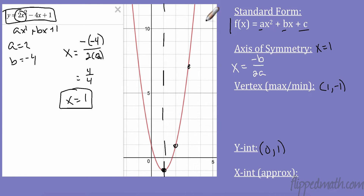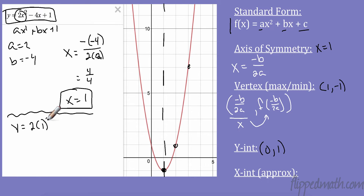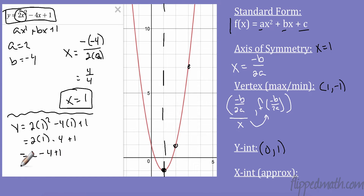Our vertex x-coordinate is the same as the axis of symmetry value. To find the y-value, we plug that x into our function. So I'm going to plug negative b over 2a — in this case, x equals 1 — into the function. y equals 2 times 1 squared, minus 4 times 1, plus 1. That's 2 minus 4 plus 1, which is 2 minus 4 equals negative 2, plus 1 equals negative 1. So our vertex is (1, negative 1).